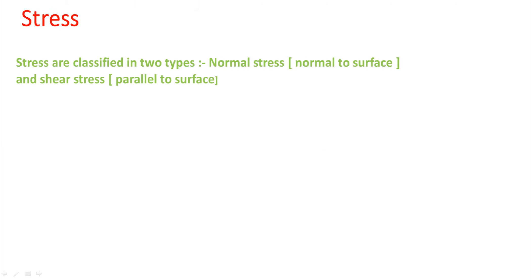Stresses are categorized as normal stress and shear stress. Normal stress, from the name only, you can say they are normal to the surface — also, I think the most appropriate name is axial stress. The second one is shear stress, which is parallel to the surface.